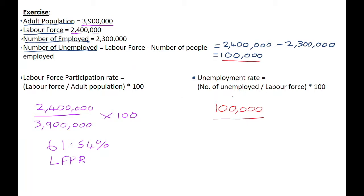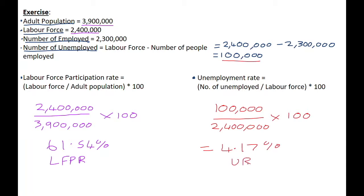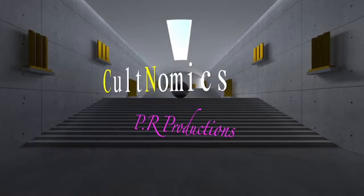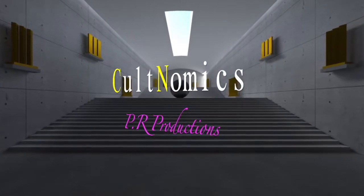The labor force is 2,400,000 people, and to get the figure in percentage terms we multiply by 100. So 100,000 divided by 2,400,000 gives us an unemployment rate of 4.17%. The unemployment rate in our economy is 4.17% with a labor force participation rate of 61.54%. I hope you come back to Cultnomics soon — bye for now!